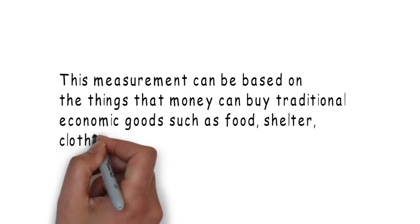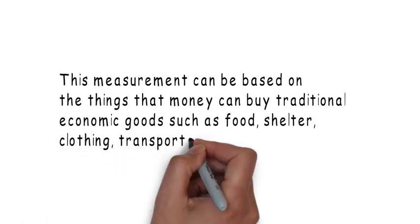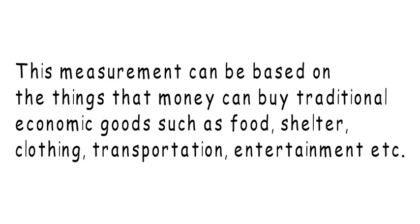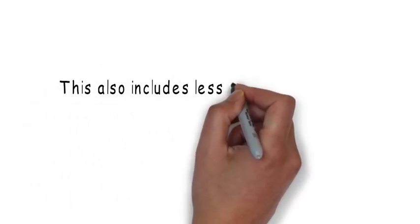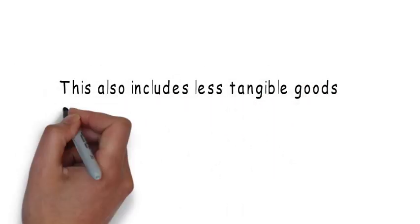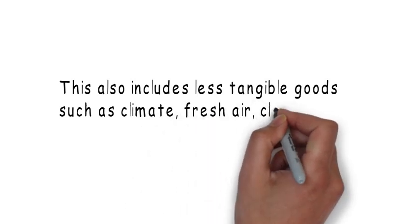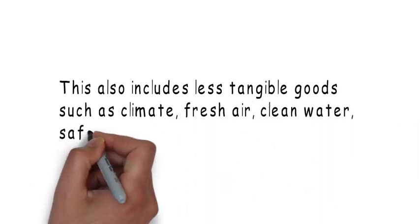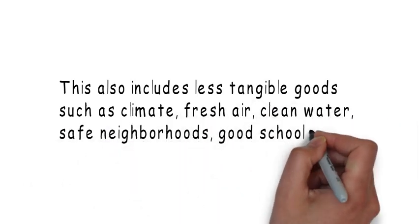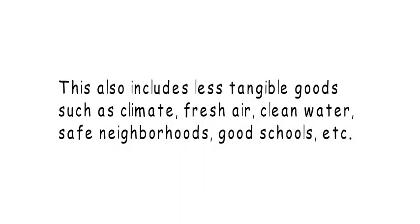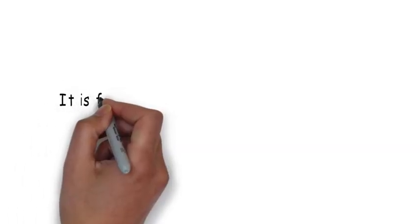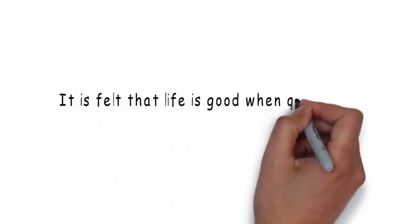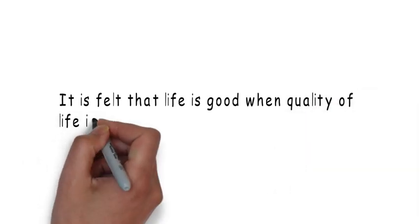This measurement can be based on things that money can buy — traditional economic goods such as food, shelter, clothing, transportation, entertainment, etc. It also includes less tangible goods such as climate, fresh air, clean water, safe neighborhoods, good schools, etc. It is felt that life is good when quality of life is high.